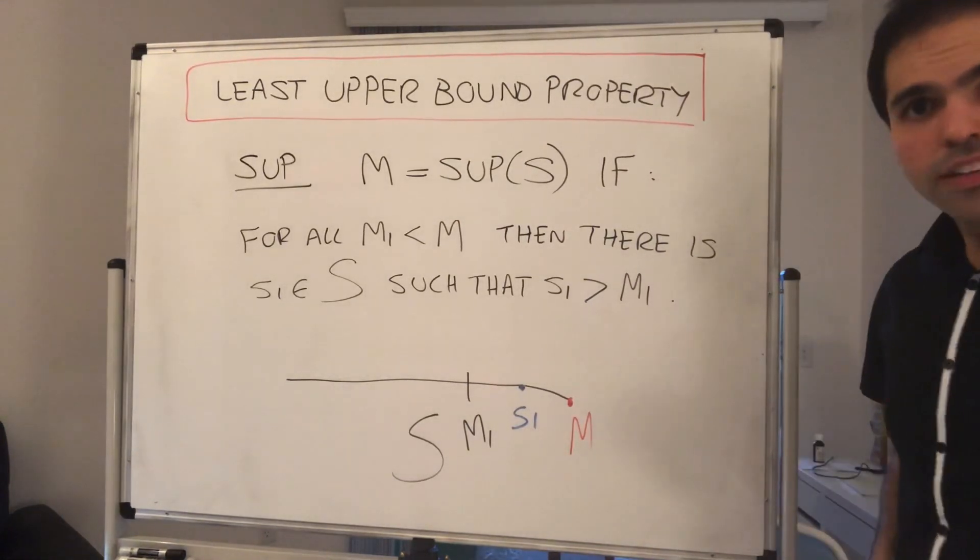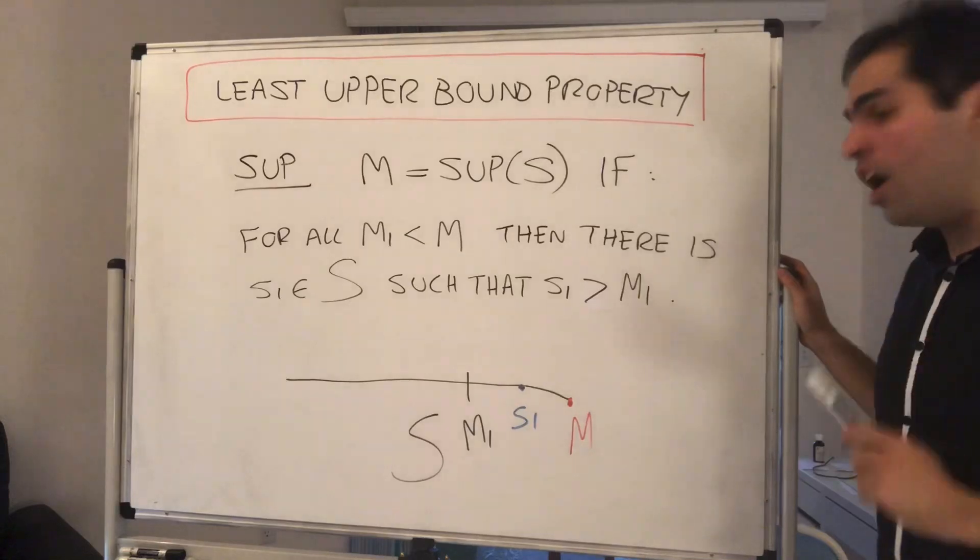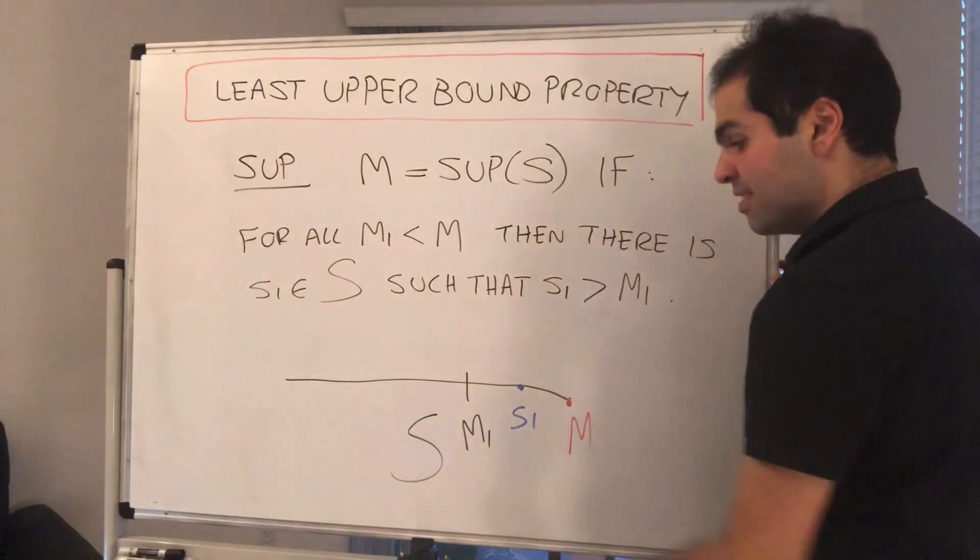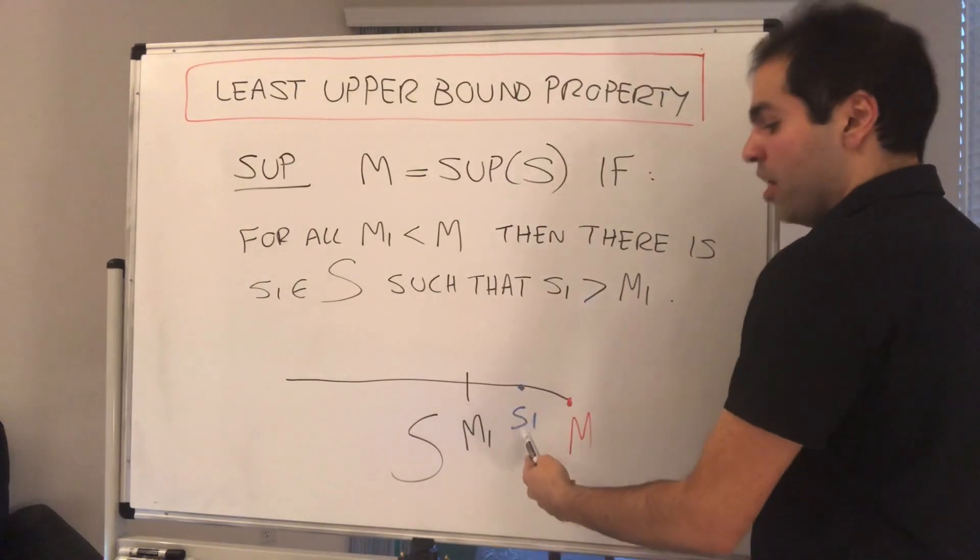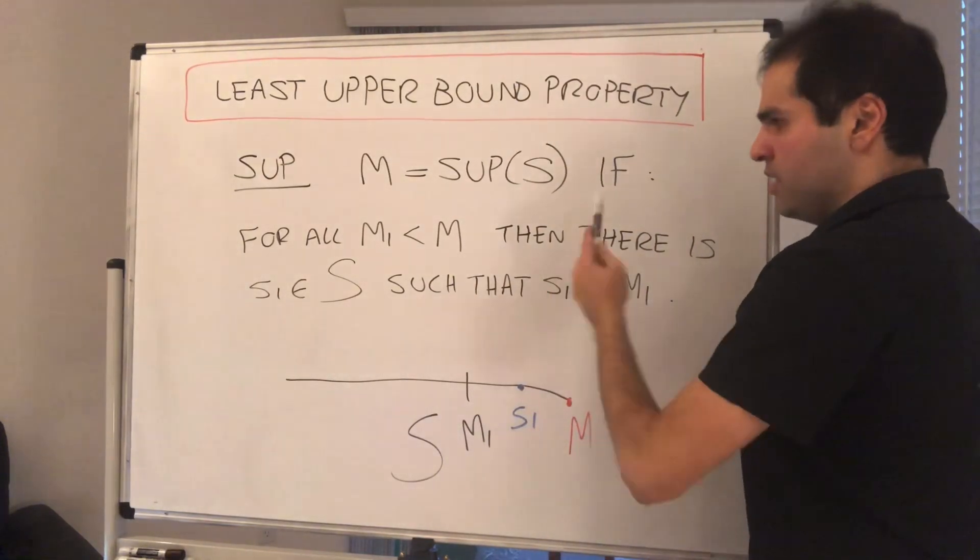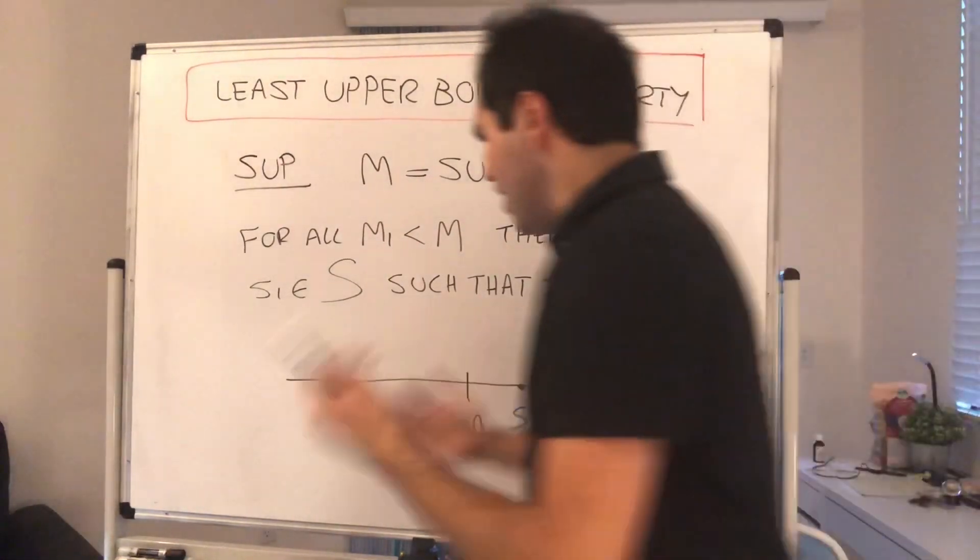And again, think of this in terms of the analogy. Suppose I tell you, you are not the best student in the class, so M1 is strictly smaller than M. What this means is there's some other student S1 in your set that's better than you.